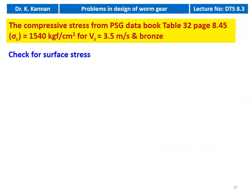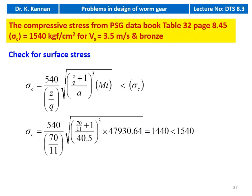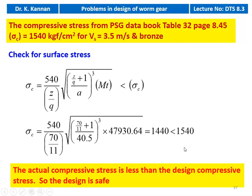For V_s = 3.5 m/s and bronze material, from table 32, sigma_c = 1540 kgf/cm². We check for the surface stress: sigma_c = 540 / (Z/Q) × sqrt[(Z/Q + 1) / A]³ × MT_design = 540 / (70/11) × sqrt[(70/11 + 1) / 40.5]³ × 47,930.64 = 1440 kgf/cm², which is less than 1540 kgf/cm². The actual compressive stress is less than the design compressive stress. The design is safe.